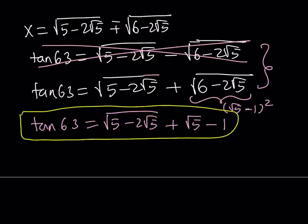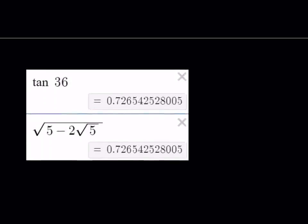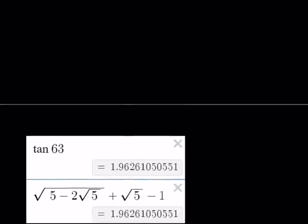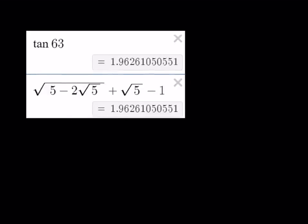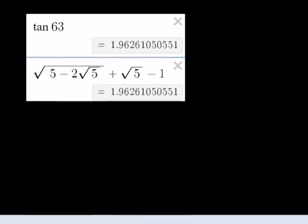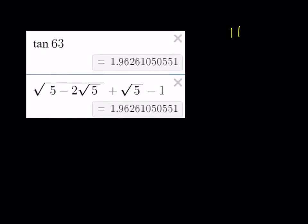Now I'm going to show you a couple things before we leave. Here's one. Tangent 36, you can safely see that it is equivalent actually to square root of 5 minus 2 root 5. And the value of tangent 63 as found here in the calculator is the square root of 5 minus 2 root 5 plus root 5 minus 1. And this brings us to the end of this video.